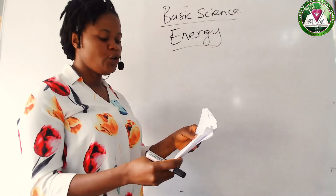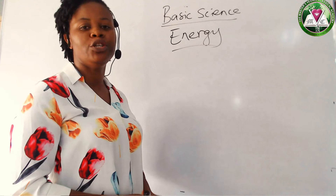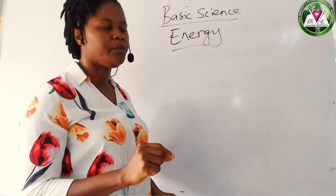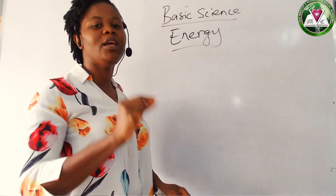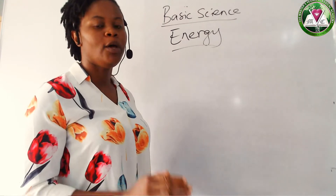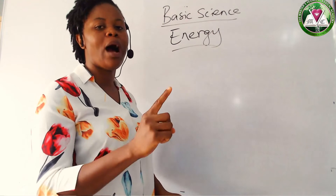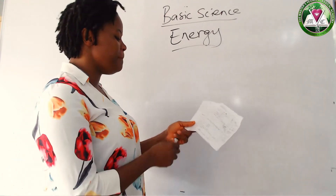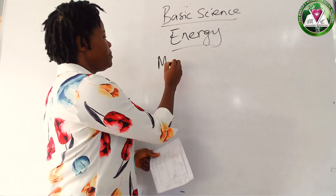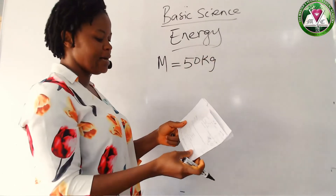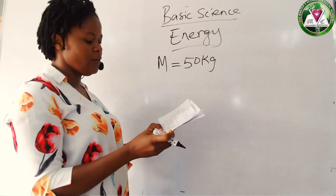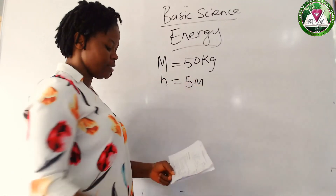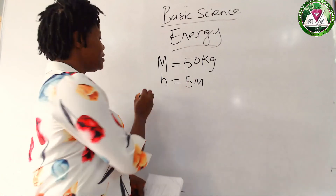The question says a fruit of mass 50 kg. Remember I told you that mass is measured in kg. If that mass is given in kg, the first thing you would do is convert grams to kg, but here mass is already given in kg so we wouldn't convert anything. So mass, m, is equal to 50 kg. It falls from a height of 5 meters to the ground.